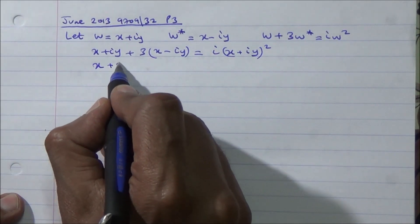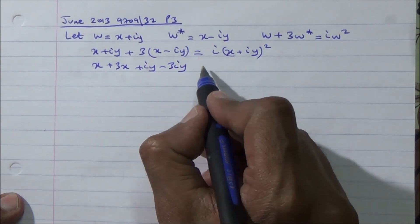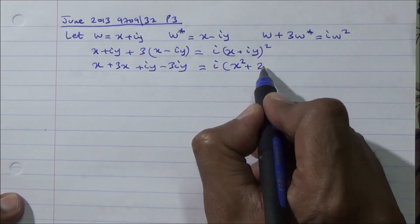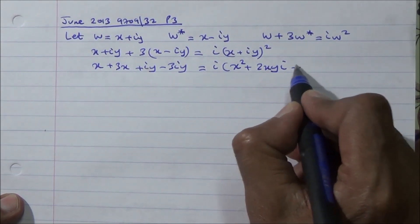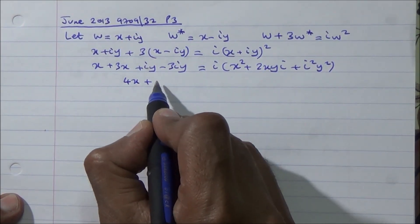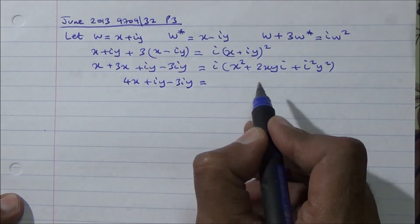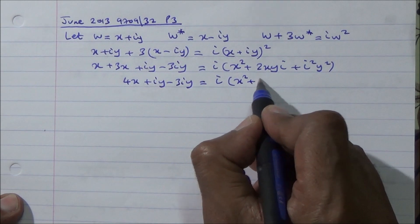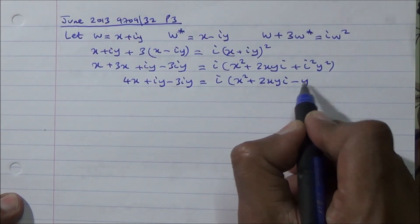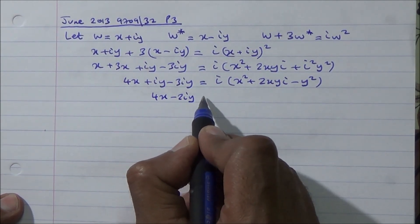Expanding the left side: x plus 3x gives 4x, and iy minus 3iy gives minus 2iy. On the right side, expanding i times (x plus iy) squared: i times x squared plus 2xyi plus i squared y squared. Since i squared equals minus 1, i times i squared times 2xy gives minus 2xy, so 4x minus 2iy equals x squared times i plus 2xyi squared minus iy squared.